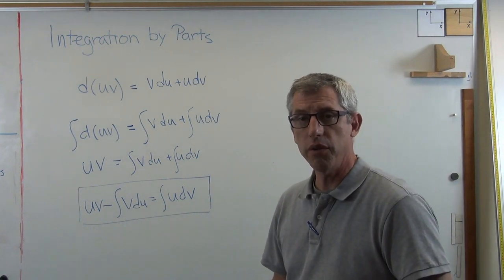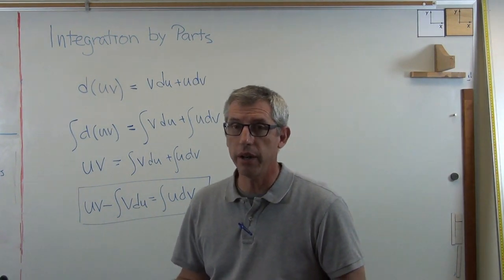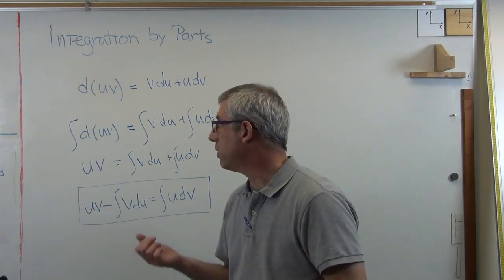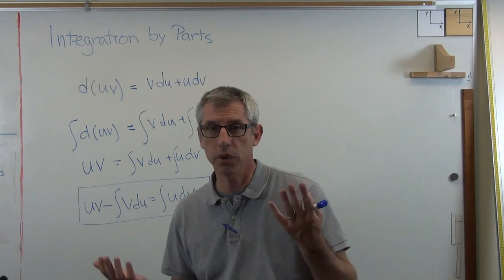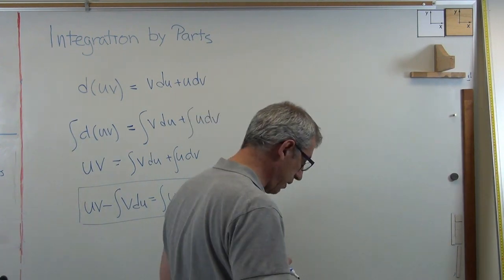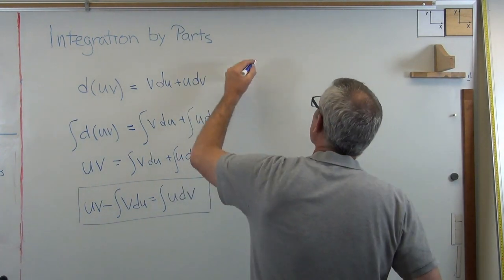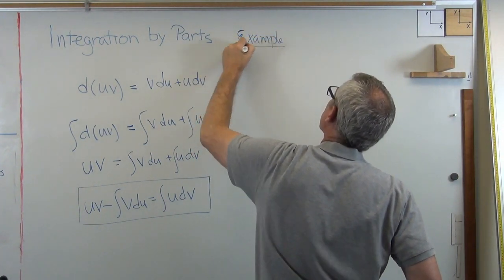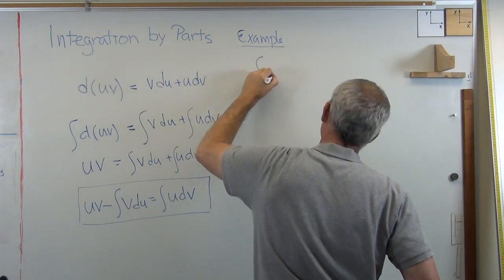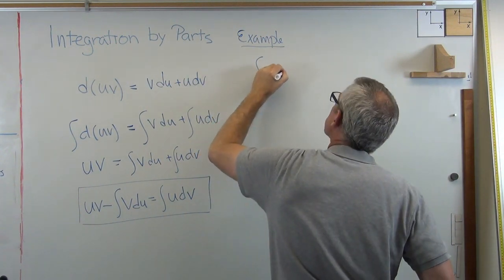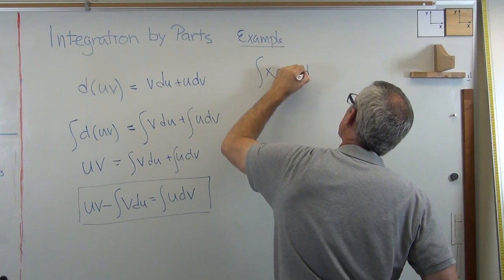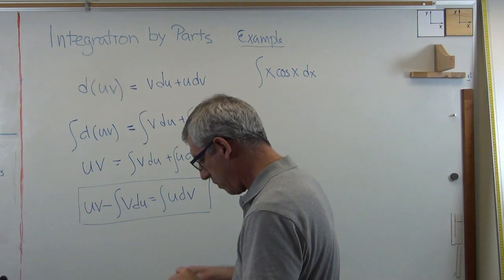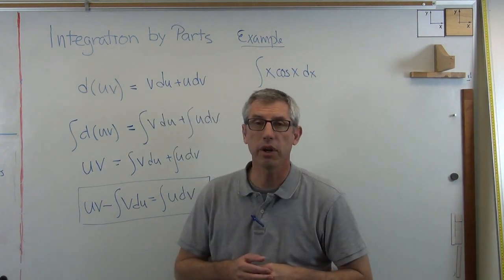Last thing I want to do is give you an example. Now, I just told you, not all functions can be integrated using integration by parts. Some of them can, some of them can't. Well, clearly, I'm going to give you an example that can. Here's an example: integral of x cosine x dx. Now, I have no idea how to do this, but I'm going to apply the integration by parts.